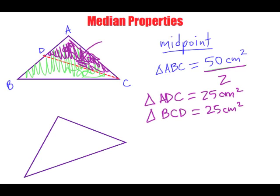What this means is if I draw my median in a triangle from a vertex to the midpoint of the opposite side, the area of these two sides of the triangle add up to the area of the entire triangle.